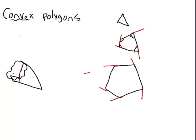Let's do another example of a shape that is not convex. This shape is concave, because as you can see, we can extend this side inward and hit the shape again. We only need one such line to confirm it is a concave polygon, and today's rules don't apply.